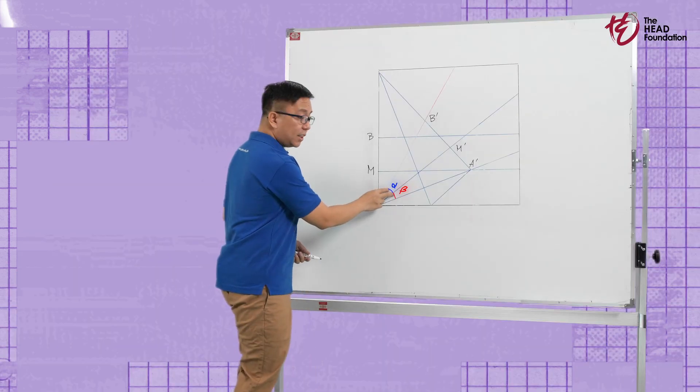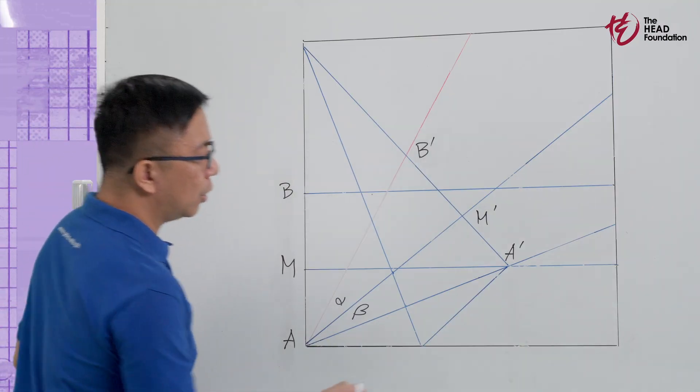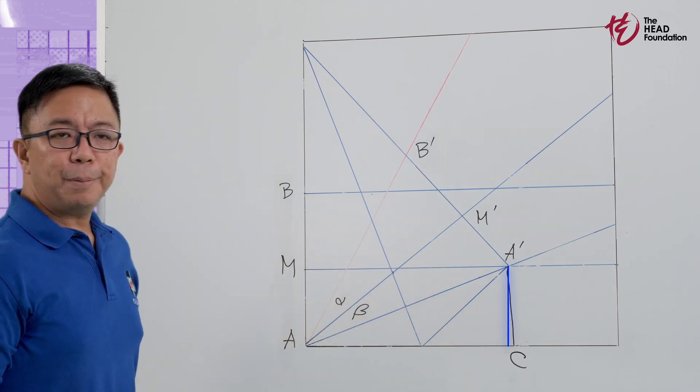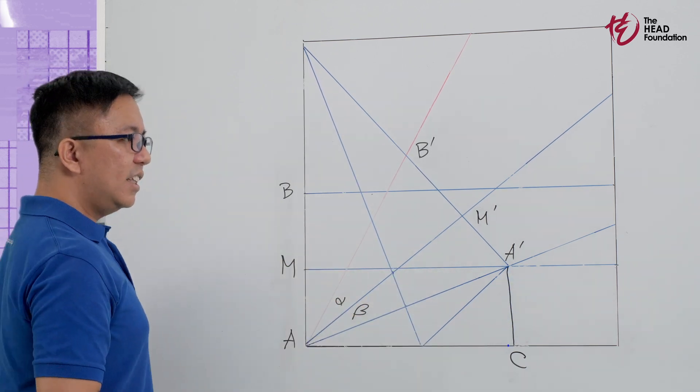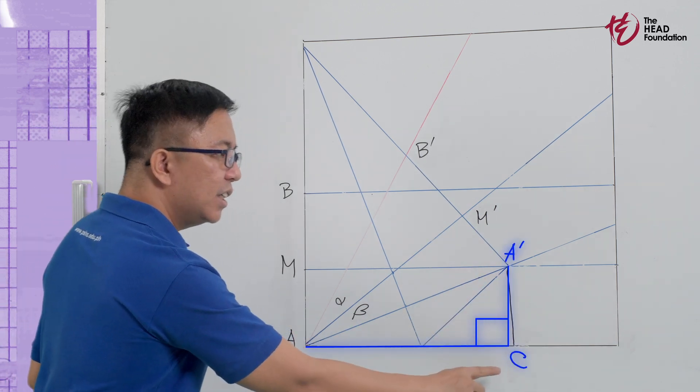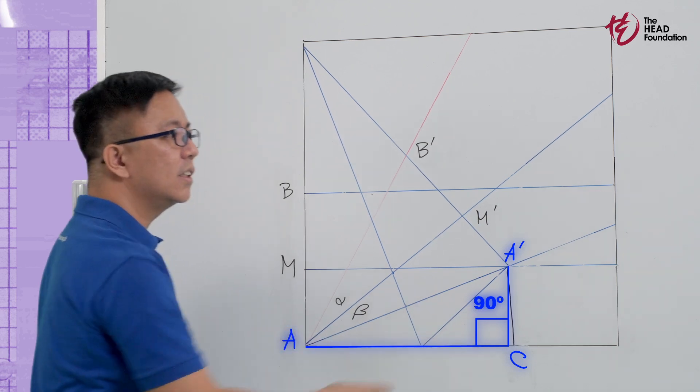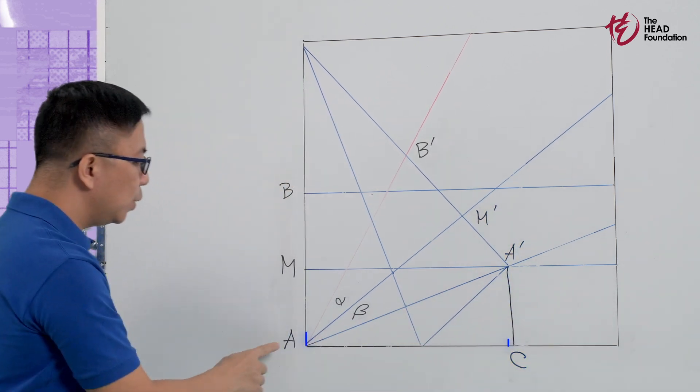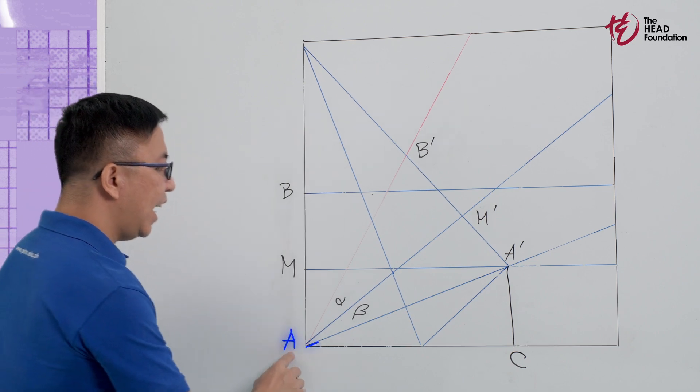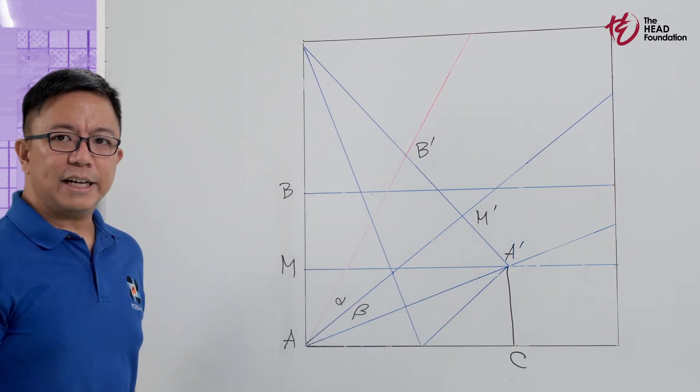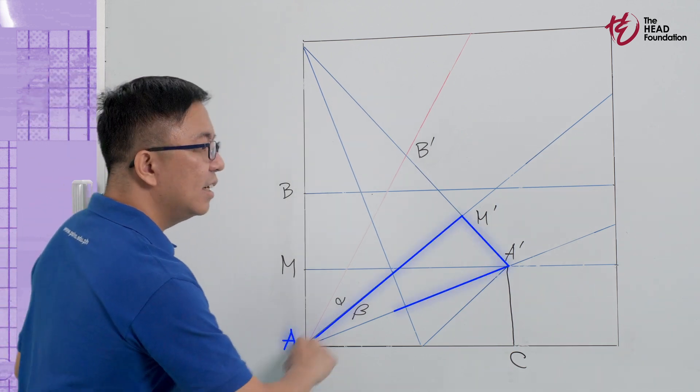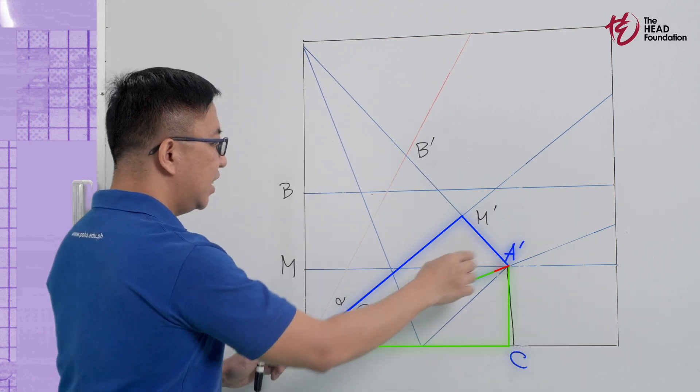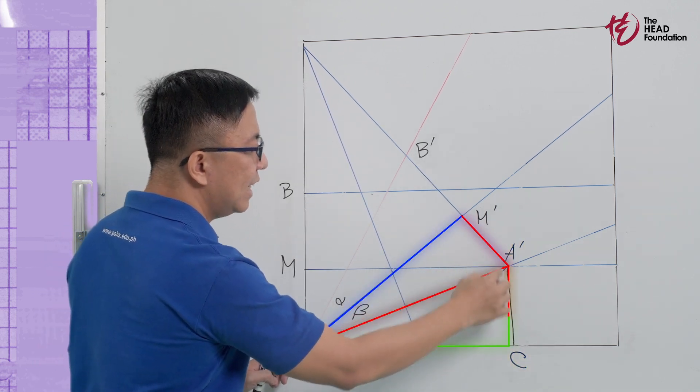Let us draw segment A prime C perpendicular to the base of our paper. This means angle A prime C A is 90 degrees. Now, A prime M prime is equal to A prime C, which is equal to AM. And the right triangle A M prime A prime is congruent to right triangle A C A prime, since their hypotenuses and corresponding legs are equal.